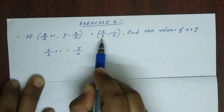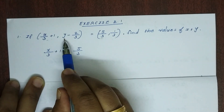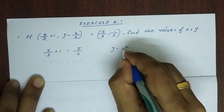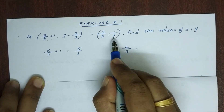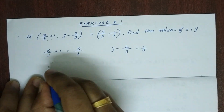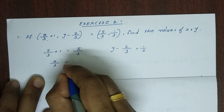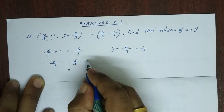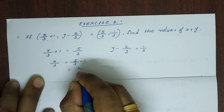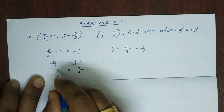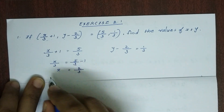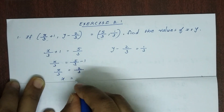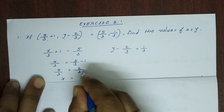This is the first element and this is the second element. So x/3 = 5/3 − 1. Now 5/3 − 1 = 2/3. Then x = 2.